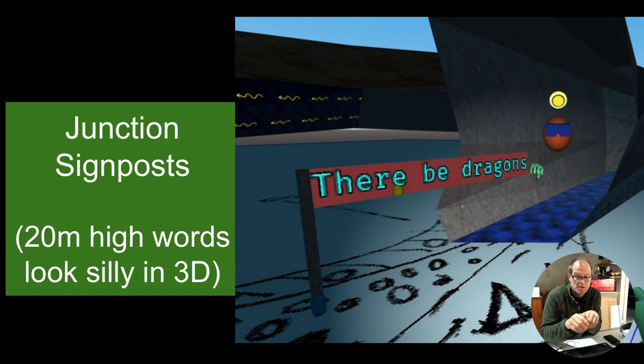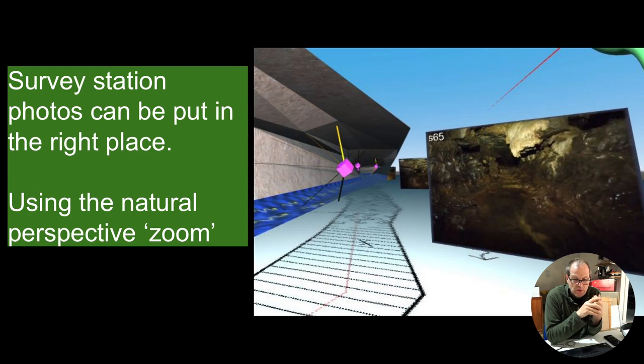We also have a place to put the photos. Normally the problem with photos is you can just stick a few on the side of a survey and they'll be about the size of a postage stamp, or you have a big directory of photos where you don't know where they are. But here we can put them all exactly in the right place, so as you wander down the passage you can actually get a picture of what it's like there.